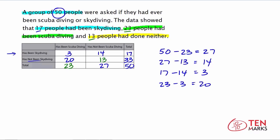When you go to fill in a table like this, start by understanding what each cell represents — consider the category for each row and column. Then work with the information you're given, and use either subtraction or addition to fill in the rest of the table.